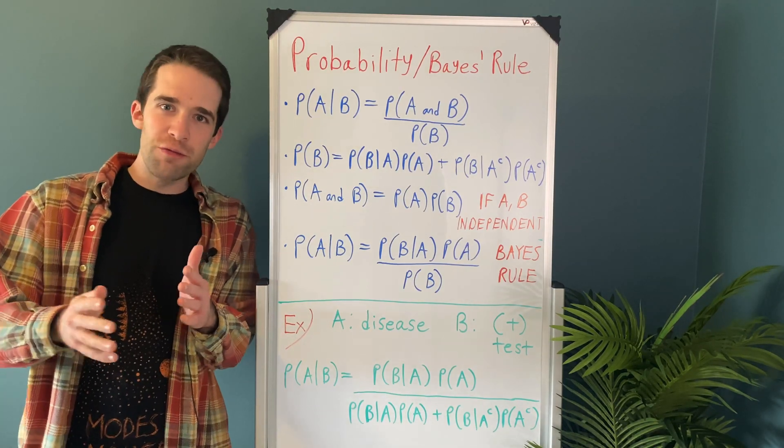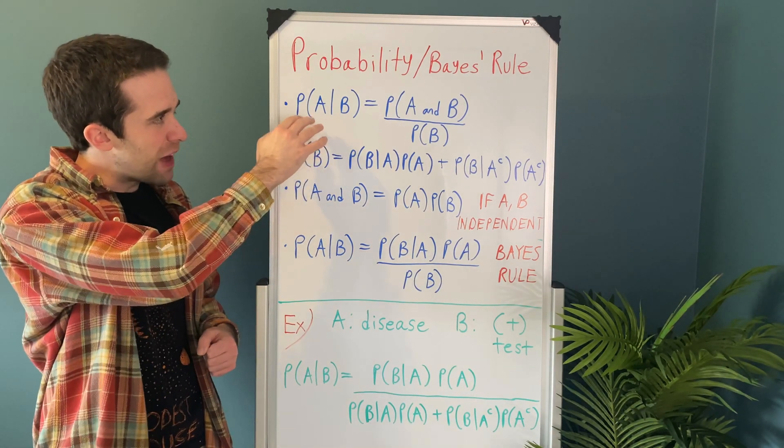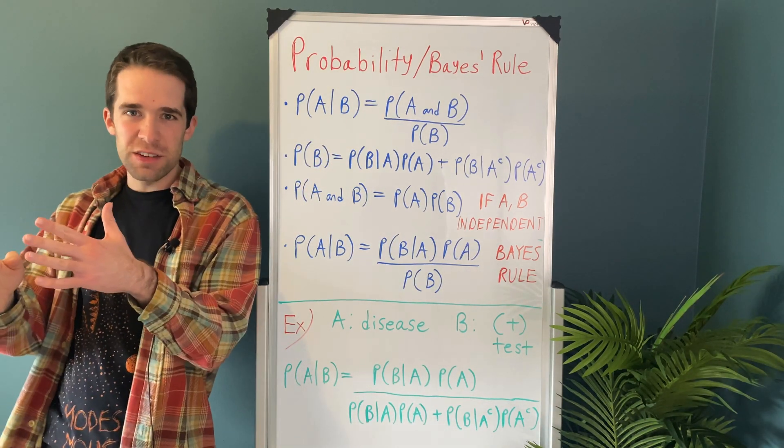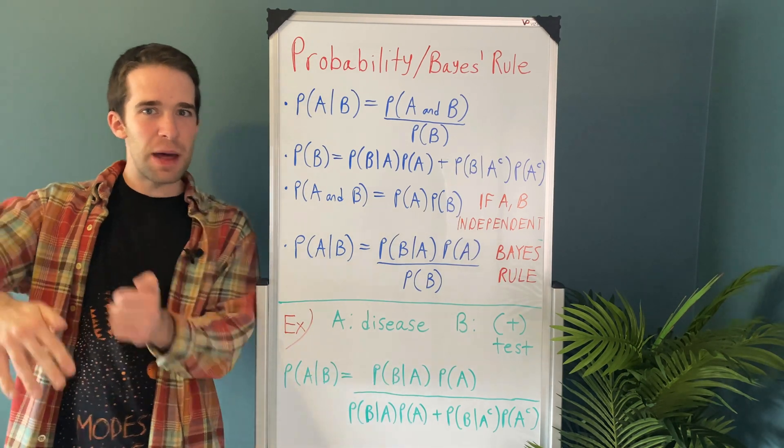So let's suppose you have two events, and let's call them A and B. When you see probability of A given B, that's basically saying, what's the probability that A occurs if we're given the fact that B occurs.